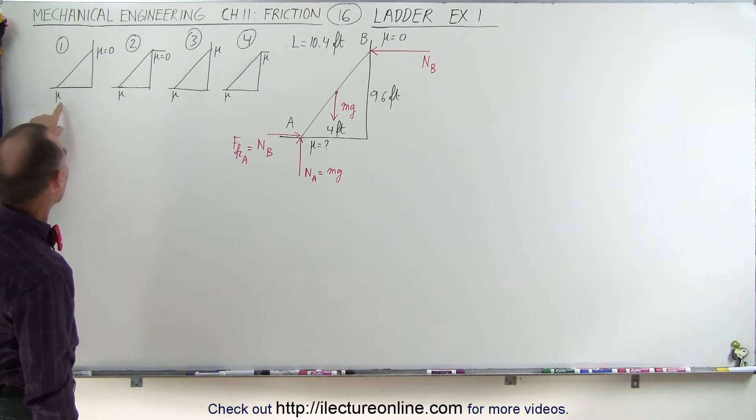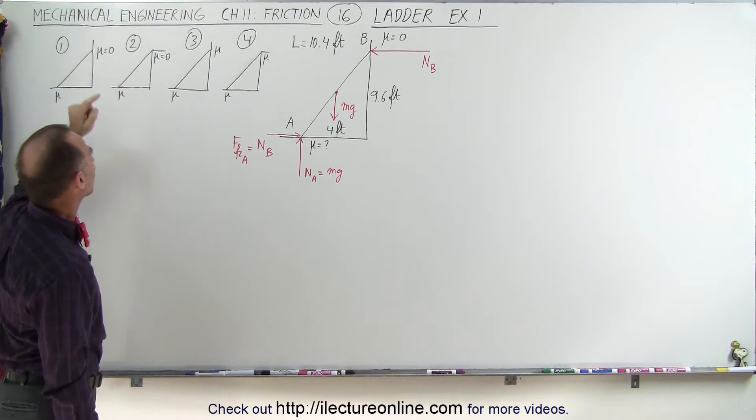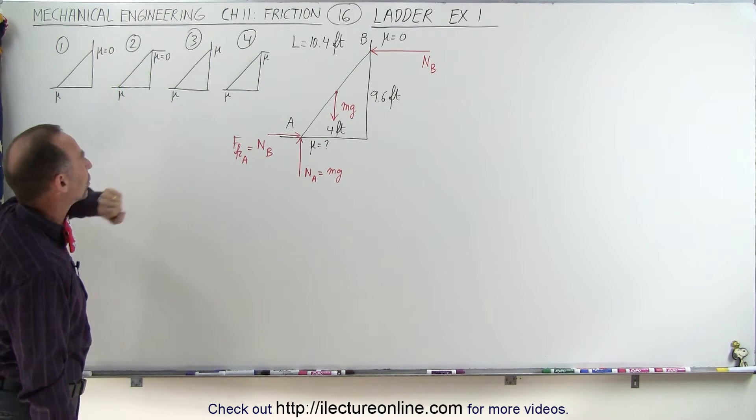On the first example, we have friction at the bottom but no friction against the side. On the second example, we have the ladder resting on a corner, friction at the bottom, no friction on the corner.